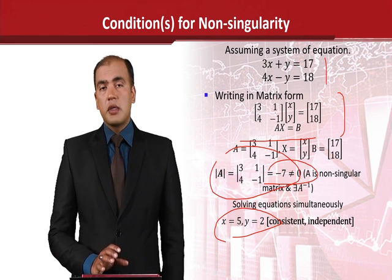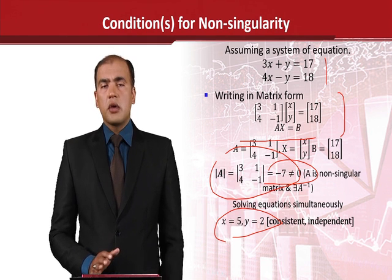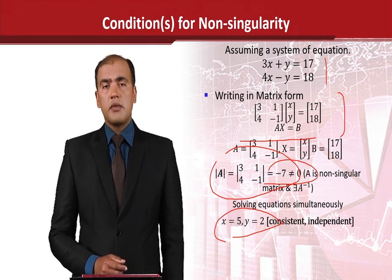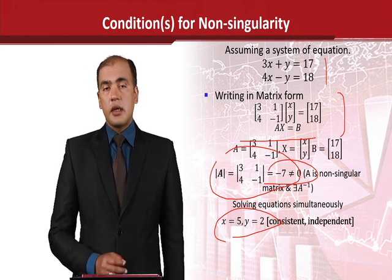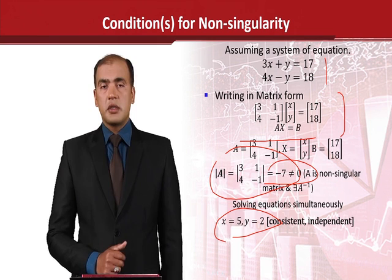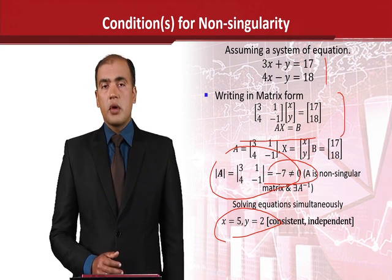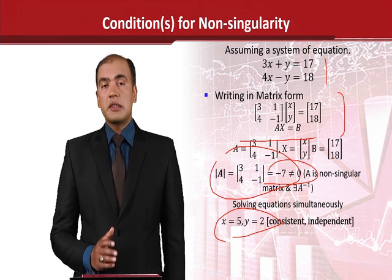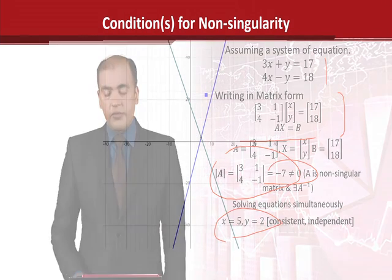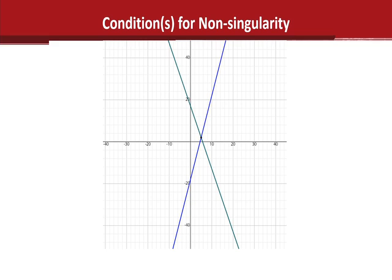We have to give them certain names because of these properties. We have a value of x and a value of y, so we can say that the result is consistent because there is no logical contradiction. Secondly, we can say that these two lines are independent because they are distinct — two different separate lines intersecting at only one point. As you can see in the graph, the intersection gives x equals 5 and y equals 2. This is the consistent and independent case.